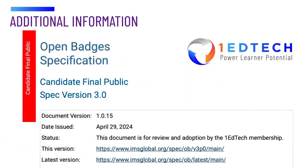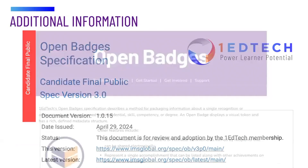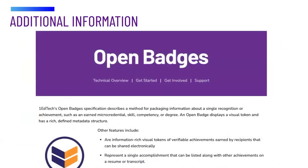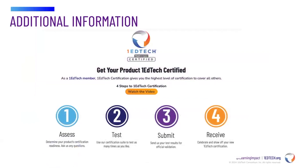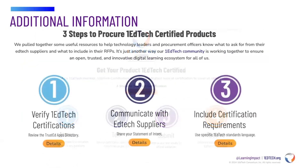Additional information, including an implementation guide and the complete OpenBadges version 3.0 specification containing all the information required to implement the standard, is available from the 1EdTech website by going to 1EdTech.org/OpenBadges. On this site, be sure to look for information on how your platform can become 1EdTech certified. Learning providers and education institutions will also find information and sample language you can use in your RFP process.